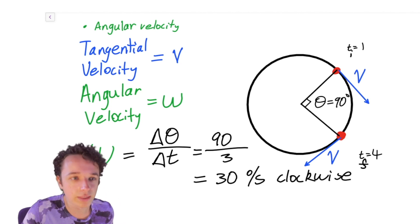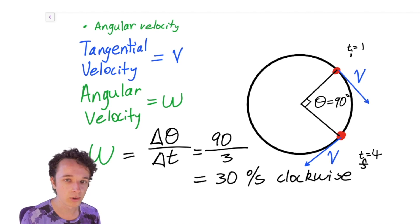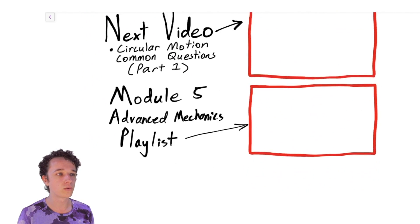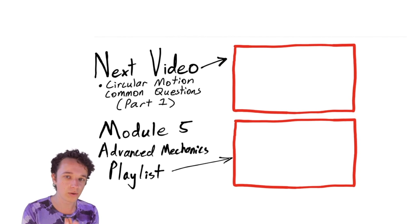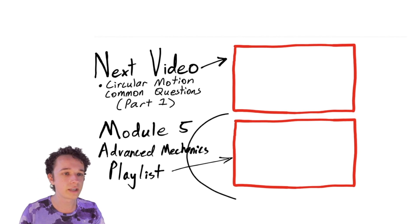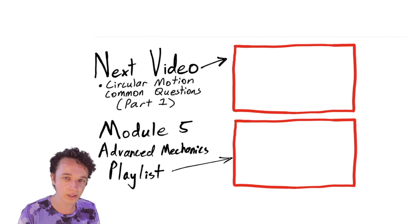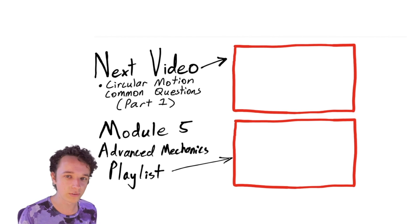And that's basically it — that's the bread and butter theory for uniform circular motion. In the next video I go through common questions that can be answered with this theory alone: Circular Motion Common Questions Part 1. The second link takes you to the Module 5 Advanced Mechanics playlist. Good luck, and I'll see you in the next video.